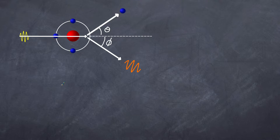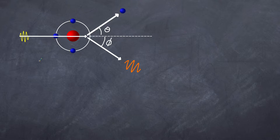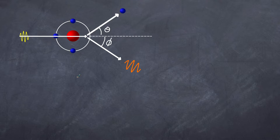I've deliberately left my face off this so that I've got maximum space to work with. We have our interaction: our incoming photon, our electron being scattered, and an outgoing photon which has a longer wavelength. I'm going to be using two key concepts — the conservation of momentum and the conservation of energy — and I'm going to use two different colors: white for momentum and yellow for energy.